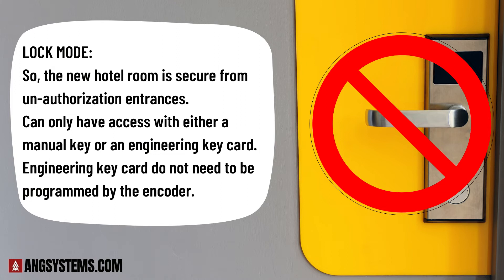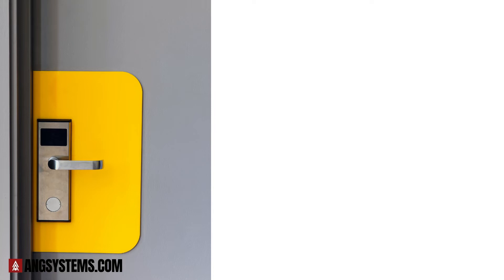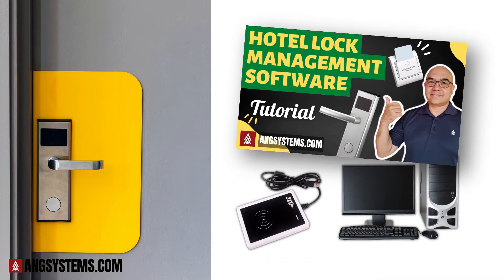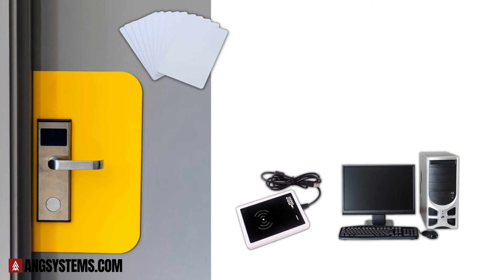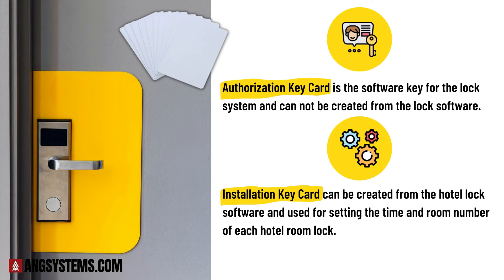Engineering key card does not need to be programmed by the encoder. Number five: Lock programming. Once all hotel rooms are ready for sales and operation, you will need to set up the hotel management software with the encoder as discussed on the last topic, and also to program each individual hotel lock with the installation key card and authorization card. The authorization key card is an important key card because it is the software key for your lock system and cannot be created from the lock software. You will need to keep the authorization key card safely for future resetting. The installation key card can be created from the hotel lock software and used for setting the time and room number of each hotel room lock.